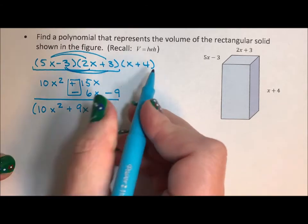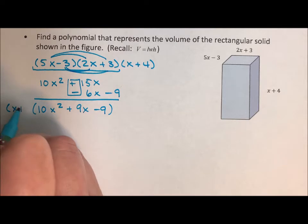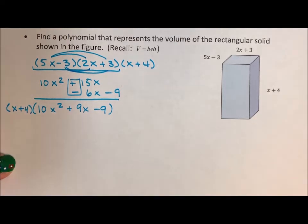When I bring this x plus 4 down, I'm going to bring it up to the front. Because I'd rather distribute 2 numbers than 3. The answer will be the same either way. I just prefer distributing 2. 2 times 3 is the same as 3 times 2, so the order doesn't matter.